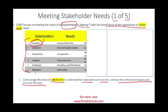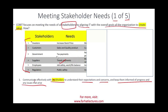Customers want sales and quality products — they want to receive good products and meet their needs. Government wants their tax payment. Suppliers want you to pay them on time. Employees want job safety and work-life balance. Regulators want public safety. Those needs may not be communicated explicitly but implicitly — this is what you need to do. You need to meet those needs, whether explicit or implicit. For example, in terms of investors, you need to increase shareholders' wealth.